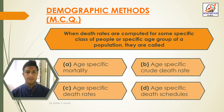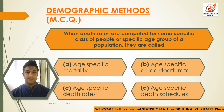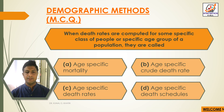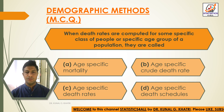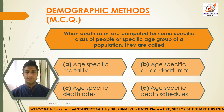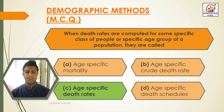Next question: when death rates are computed for some specific class of people or specific age group of a population, they are called — Option A: age-specific mortality, Option B: age-specific crude death rate, Option C: age-specific death rates, Option D: age-specific death schedules. The answer is Option C — age-specific death rates.